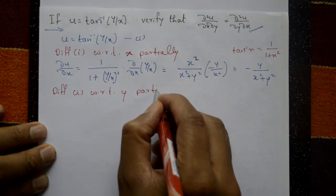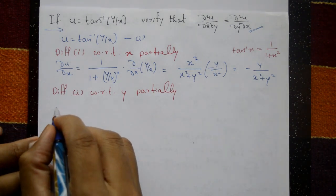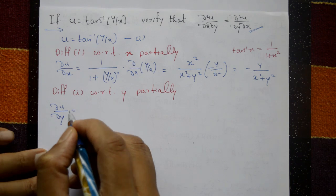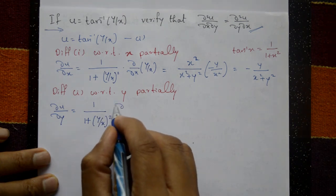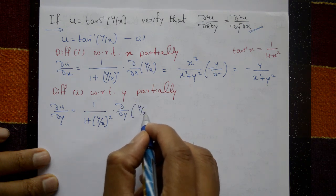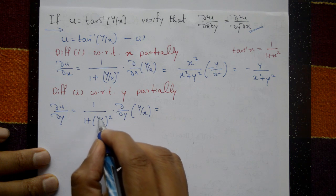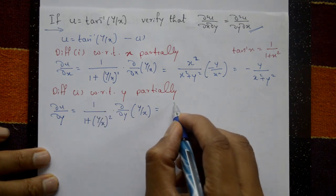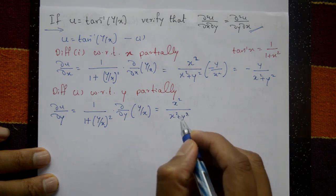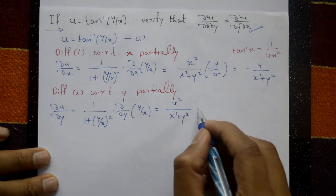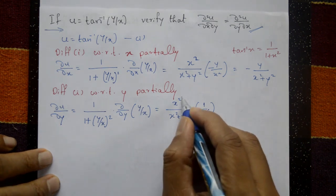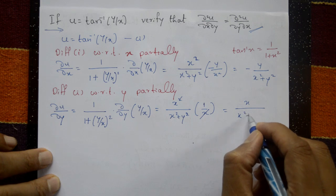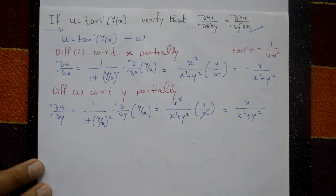∂u/∂y equals, again using the formula 1 upon 1 plus (y/x) whole squared, into ∂/∂y of (y/x). Simplifying: the denominator becomes (x² + y²)/x², and differentiating y/x with respect to y gives 1/x. So ∂u/∂y equals x/(x² + y²).